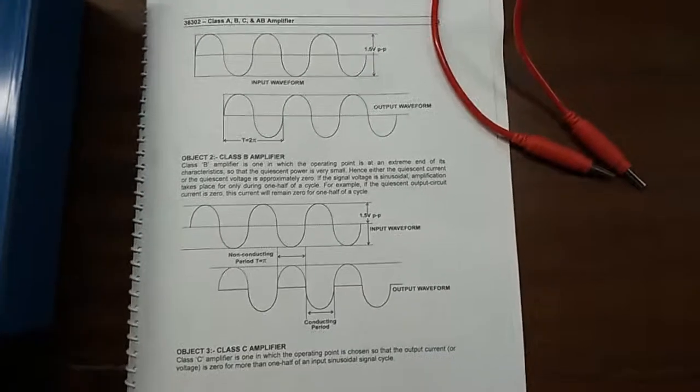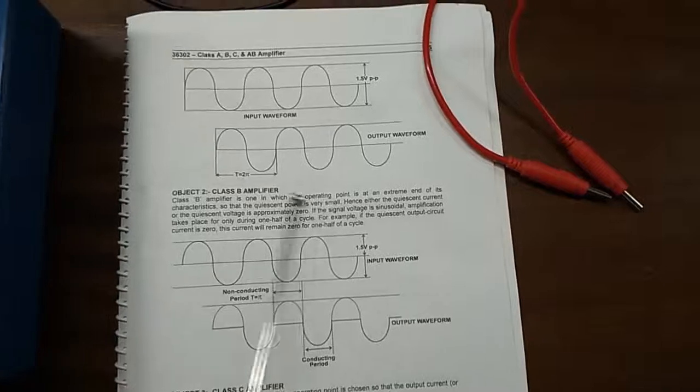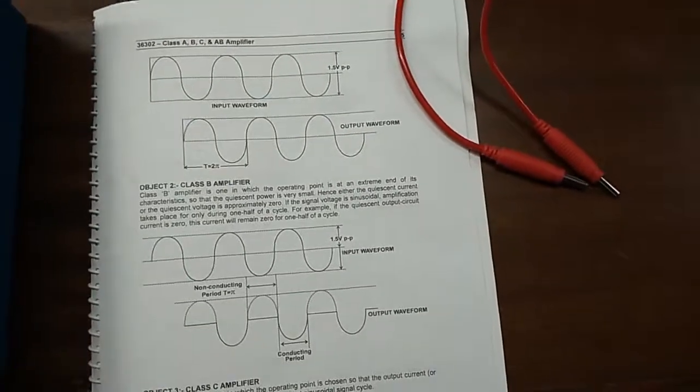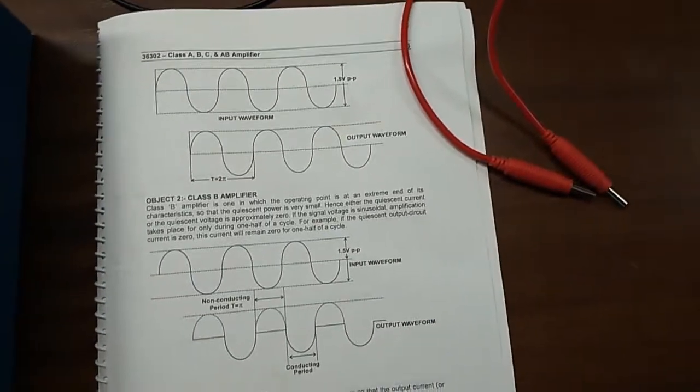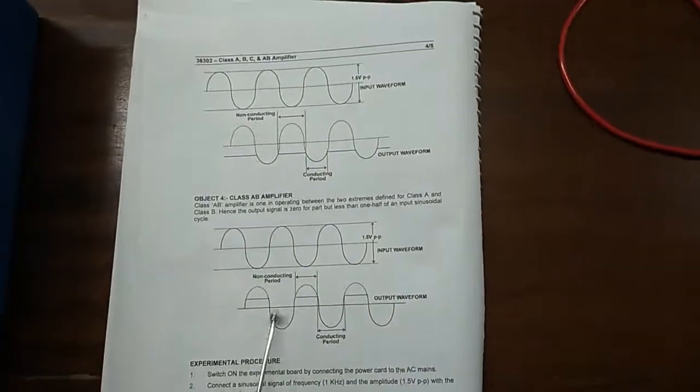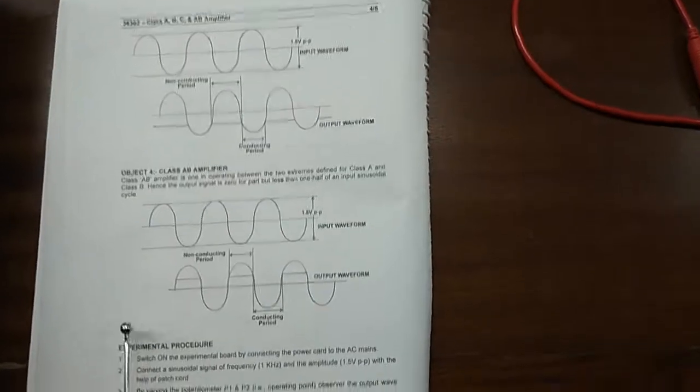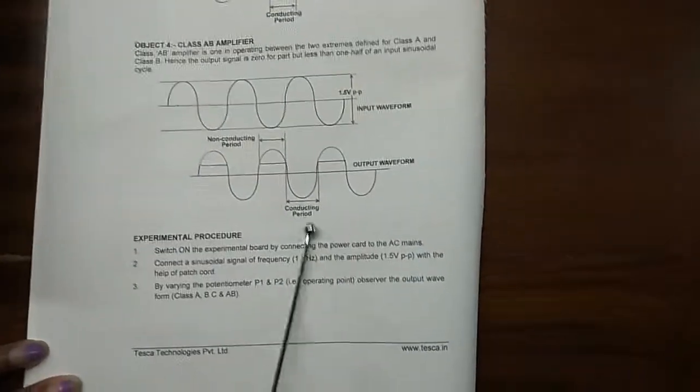In this experiment we will see the output waveform of class A amplifier. This is the waveform for class A amplifier, class B amplifier. This is the waveform for class C amplifier, and this is the waveform for class AB amplifier.